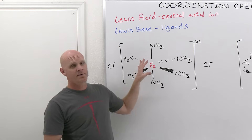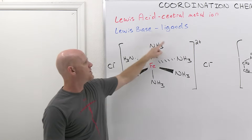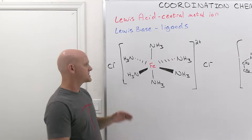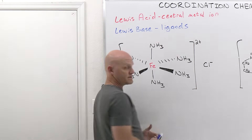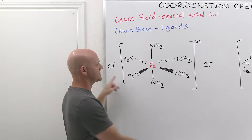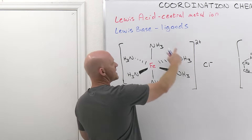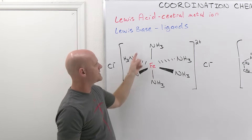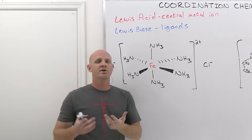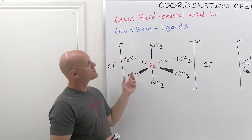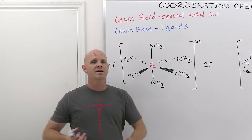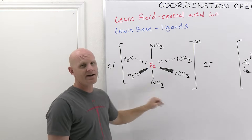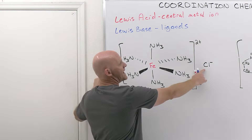The central metal ion and all the ligands it is bonded to is what we call the coordination sphere, and everything outside the sphere is not part of the coordination sphere. In this case, this is a complex cation — it's a complex ion. When your central metal ion bonded to ligands has an overall positive charge, we call it a complex cation. When it's overall negative, we call it a complex anion. When it's neutral, we call it a neutral complex. Here we've got a complex cation and then simple anions.